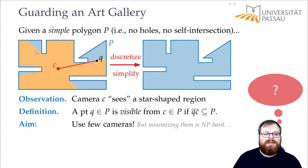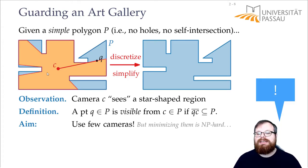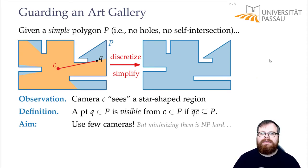In general, it would be great if we can partition it into these star-shaped regions. Because for every star-shaped region, we know that one camera is enough. But it's not so easy to partition it into star-shaped regions, because star-shaped regions still can be very big. Where else is it very easy to guard something?